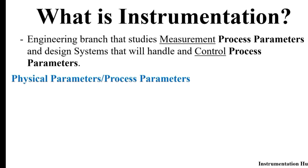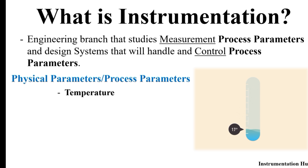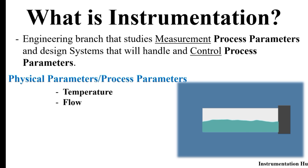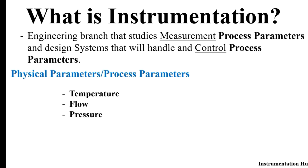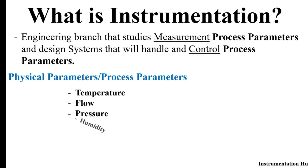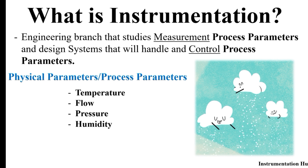The next question is: what are physical parameters? Physical parameters are those that can affect living or non-living things. The first parameter is temperature — everyone knows what temperature is and how it affects living as well as non-living things. It is measurable and can be controlled. The second parameter is flow — water flow, steam flow, air flow — and flow can also be controlled. The third parameter is pressure, which is a kind of force acting on an object, such as water pressure, air pressure, or solid pressure.